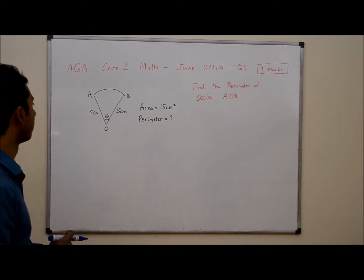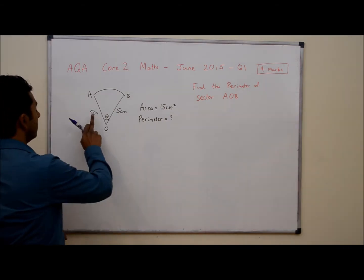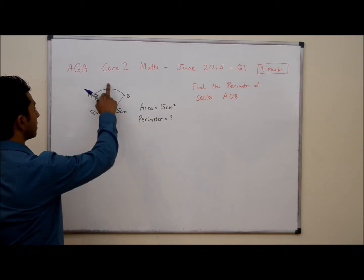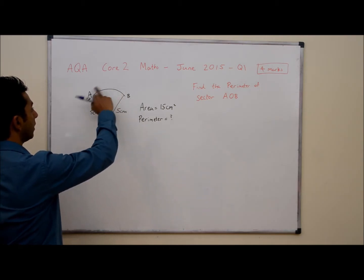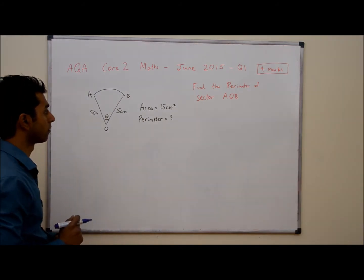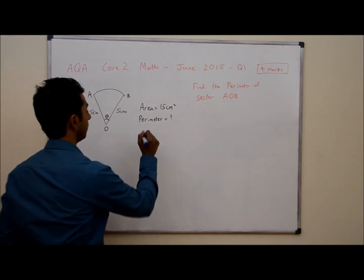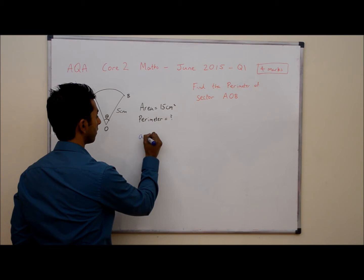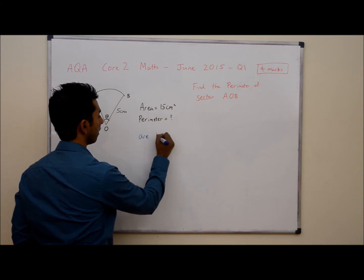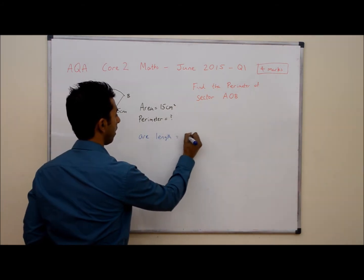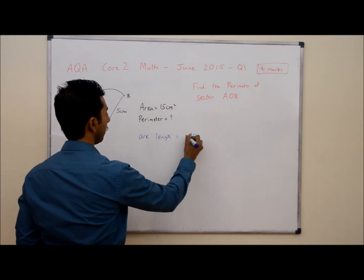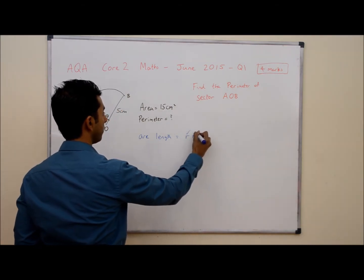So in order to find the perimeter, the perimeter is the sum of the three sides. So we need to work out the length of this arc here AB. In order to find the arc length we need to use a formula: arc length is equal to R times theta. Now we know what R is but we don't know what theta is.